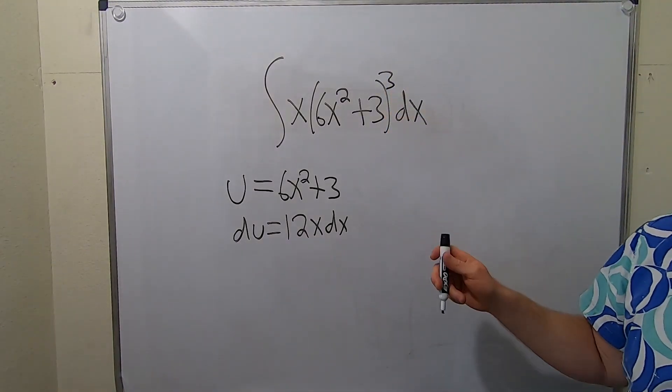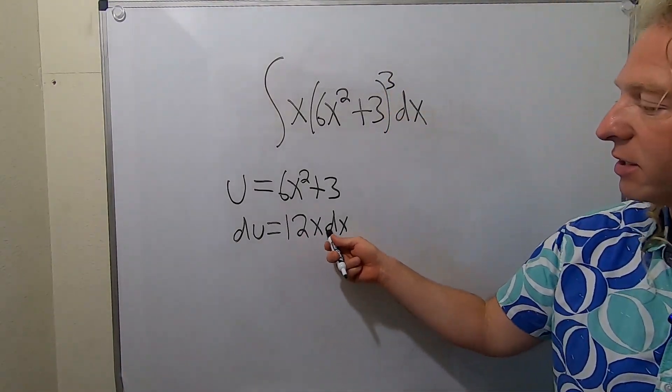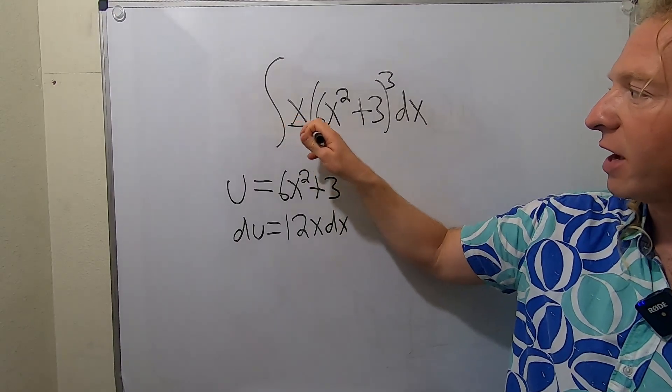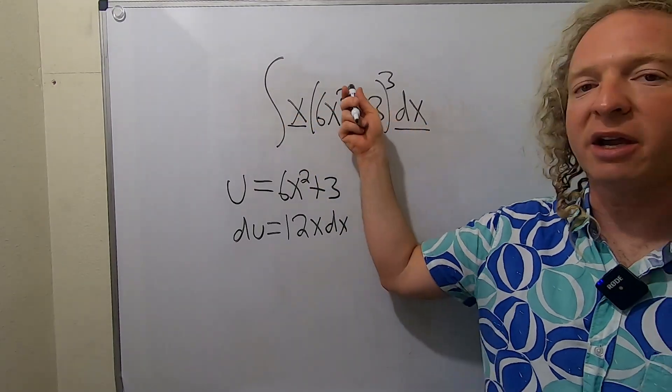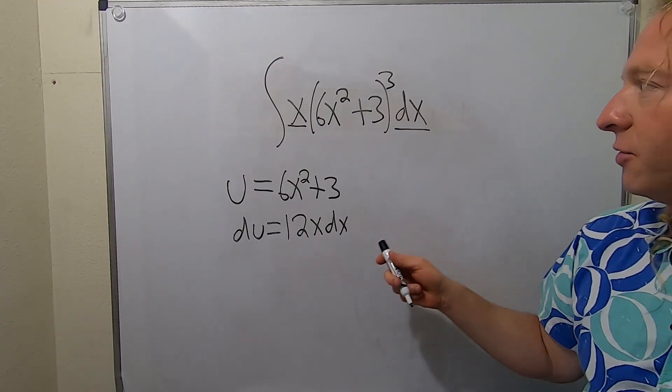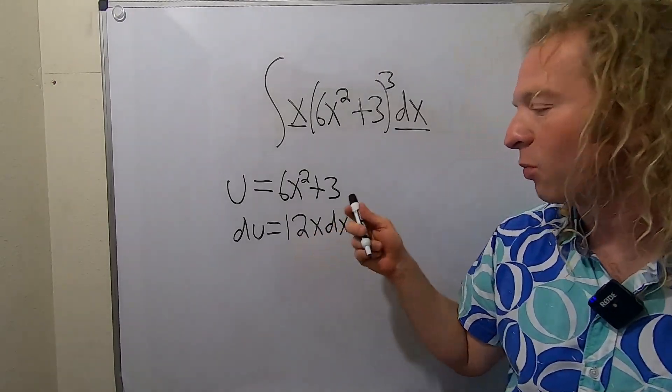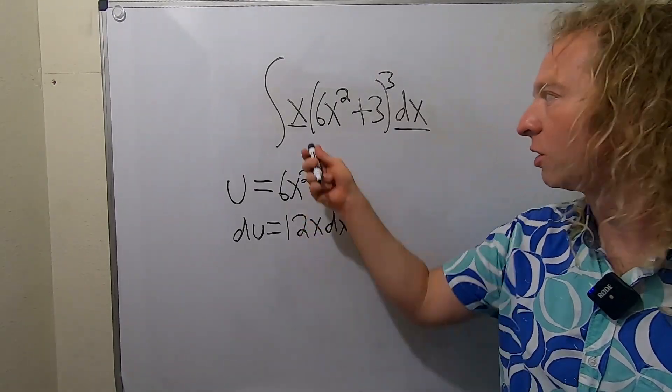Now here it's a little bit harder. So here we have 12x dx, but here we simply have x dx. This piece is taken care of because we know that's going to be our u. So what we have to do is we have to get rid of this 12 because we want to make this look like this.